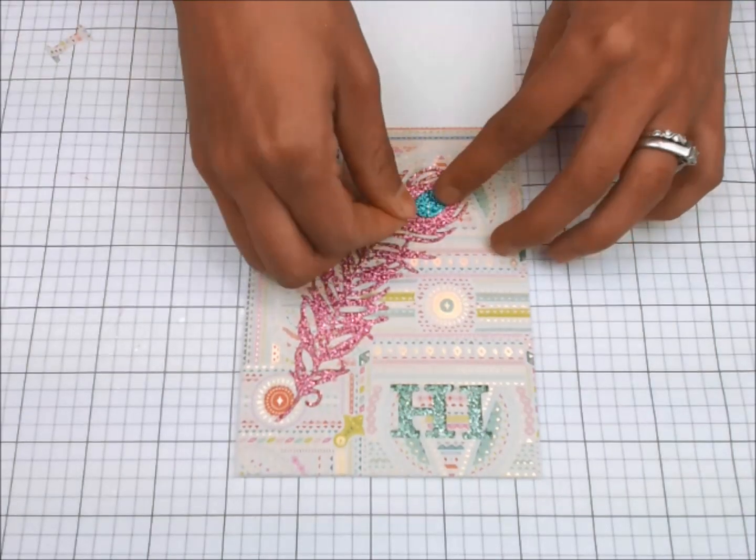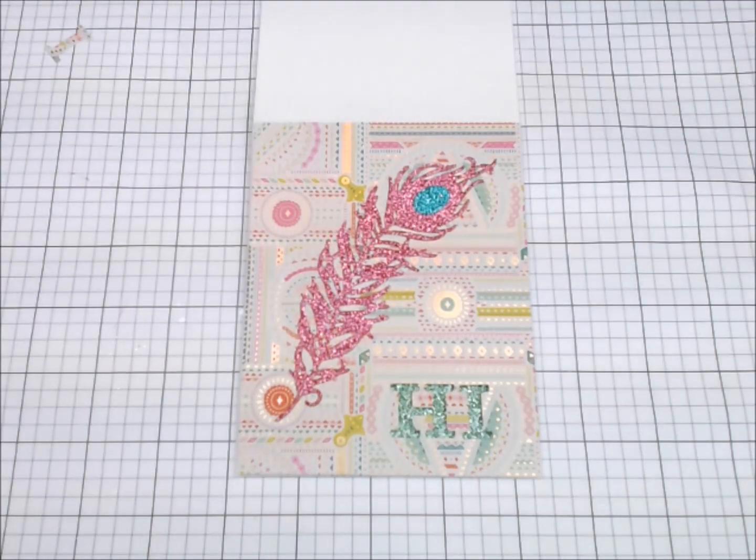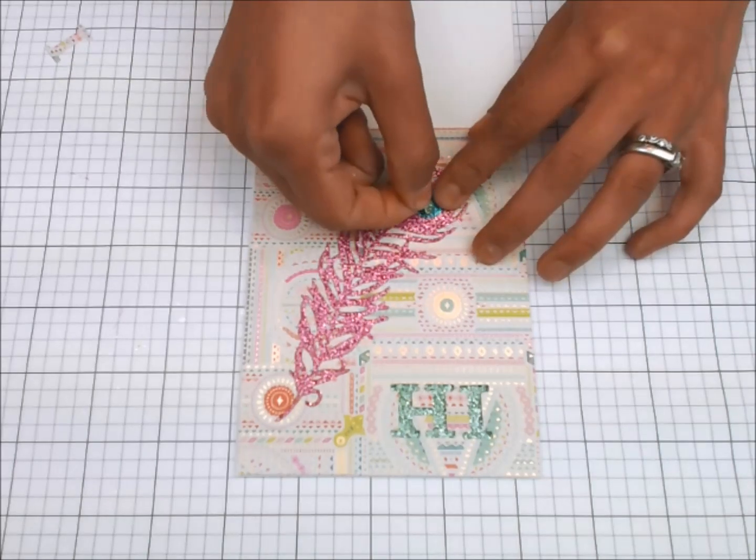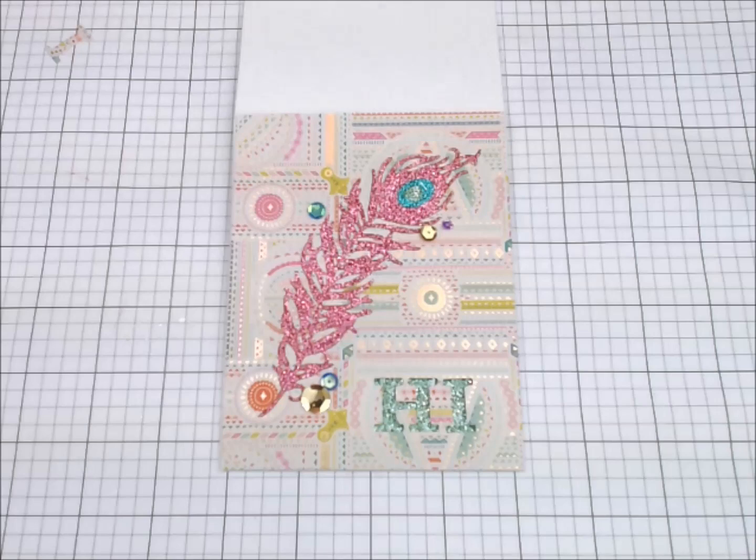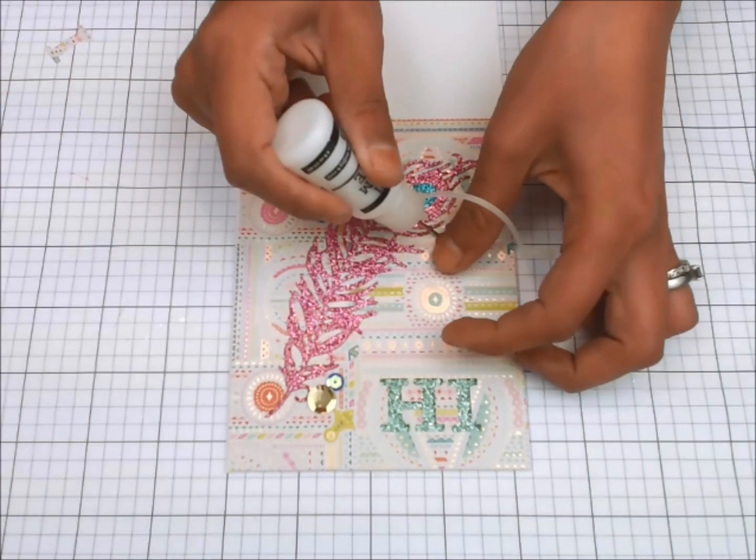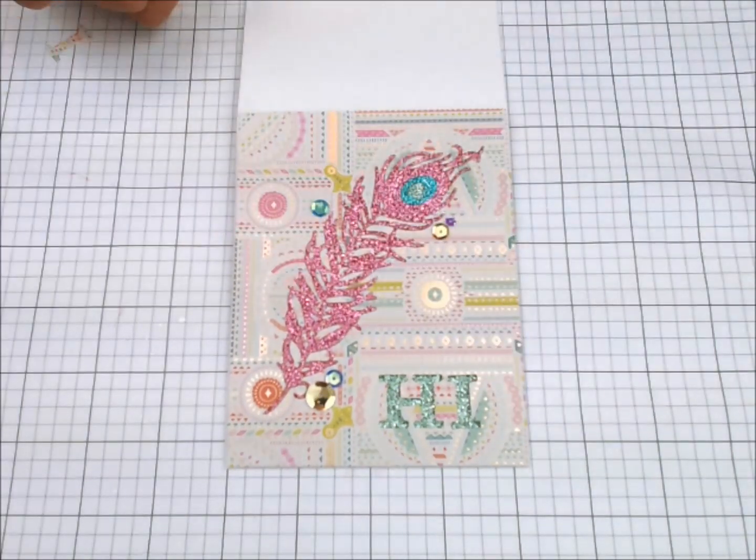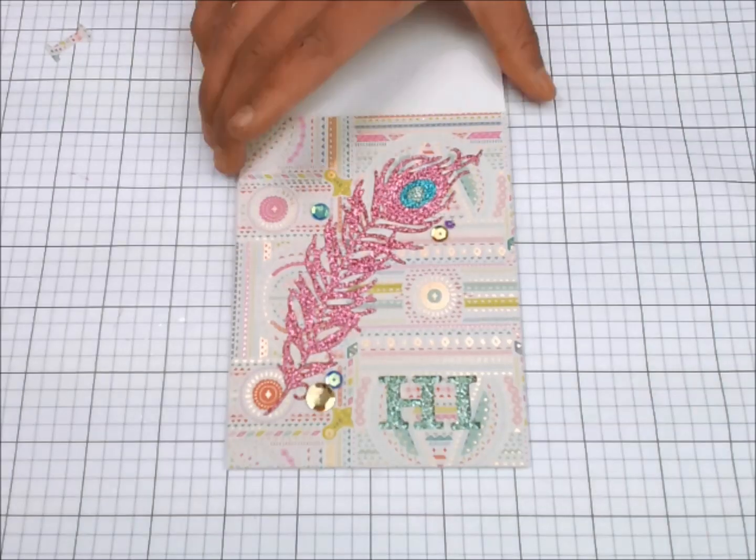Back to my card, I'm gluing my feather die onto patterned paper on my card base and adding Pretty Pink Posh sequins. I hope you love it, I hope that you comment, and I hope that you win. Thanks for stopping by.